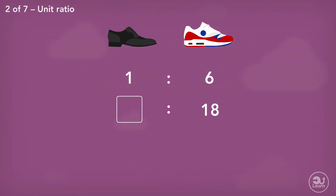Once again, we lay out the information based on the question like so. For every pair of smart shoes, he has six pairs of trainers, which means the number of trainers he owns is six times larger than the number of smart shoes he owns. Therefore, to calculate the number of smart shoes he owns, divide 18 by six. The number of smart shoes he owns is three.